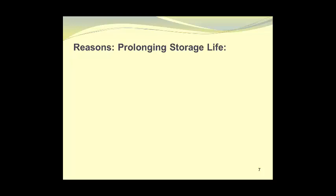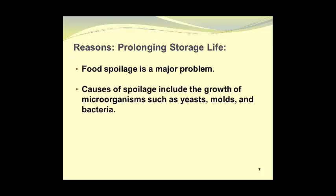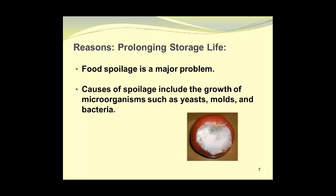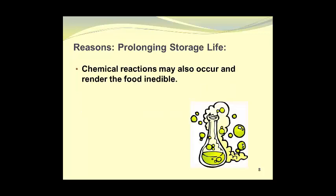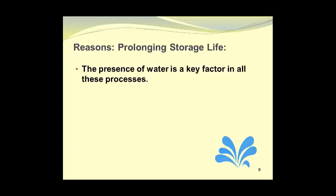Prolonging storage life is one of the main reasons. Food spoilage, of course, is a major problem. Causes of spoilage include the growth of microorganisms such as yeasts, molds, and bacteria. And here we see a tomato which is definitely past its prime and supporting a large colony of mold growth. Chemical reactions may also occur and render the food inedible. The presence of water is a key factor in all of these processes.